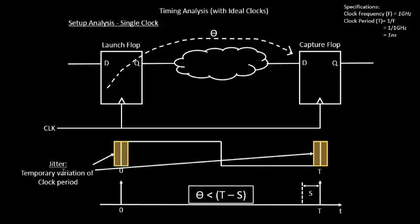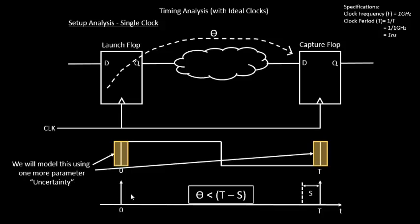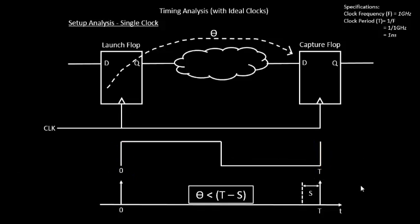Those variations are captured in a term called jitter — the temporary variation of the clock period. This needs to be modeled in our equation since there is no other way to control the non-idealities of the PLL. So let's bring this to a more real scenario: initially, combinational delay should be less than T minus S. Now we add one more parameter to model jitter, called uncertainty, and the requirement becomes: combinational delay < T - S - SU, where SU is the setup uncertainty.